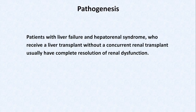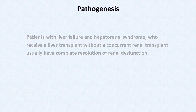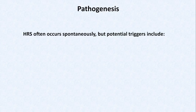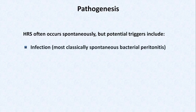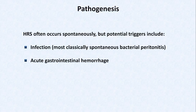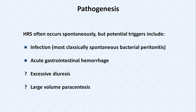As evidence that hepatorenal syndrome does not involve any intrarenal pathology, patients with liver failure and hepatorenal syndrome who receive a liver transplant without a concurrent renal transplant usually have complete resolution of renal dysfunction. Hepatorenal syndrome often occurs spontaneously, but potential triggers include infection — most classically SBP — and acute gastrointestinal hemorrhage. It's currently debated whether excessive diuresis or large-volume paracentesis can precipitate hepatorenal syndrome, with some references claiming these are common causes while others provide evidence that the association may be non-existent.